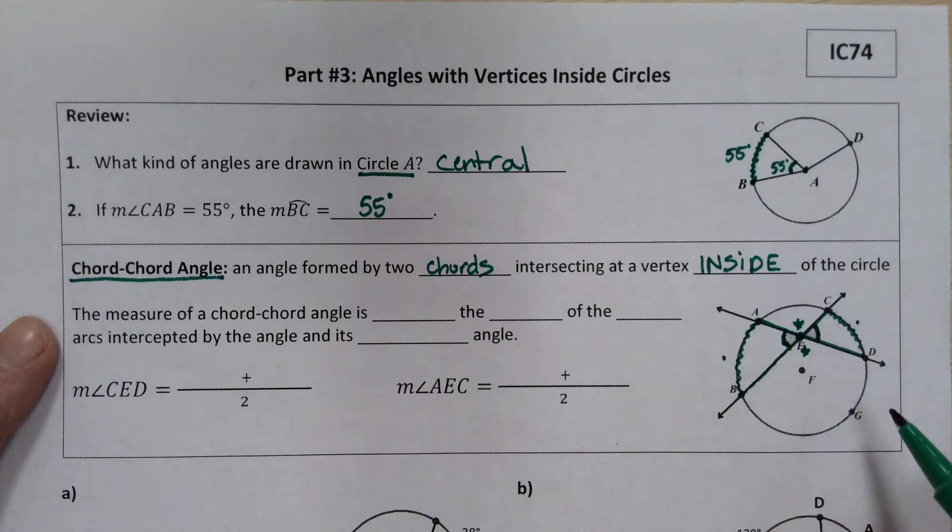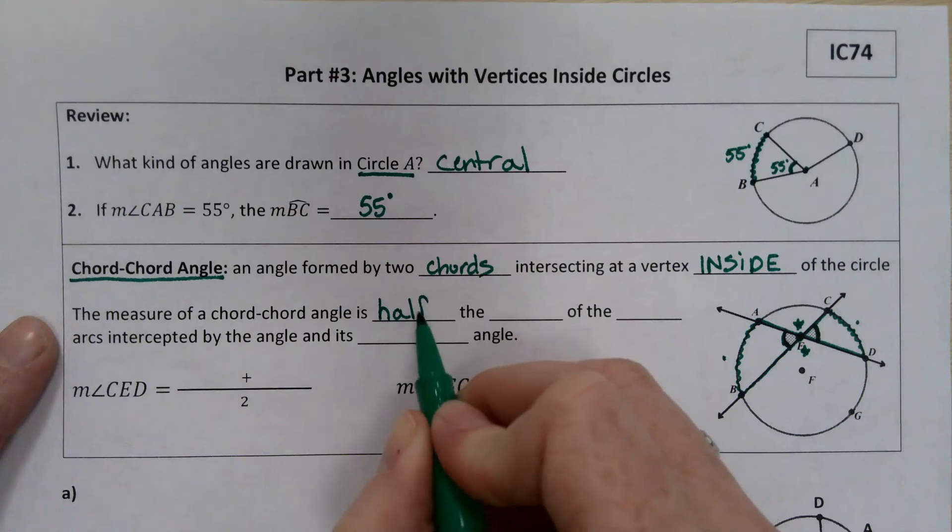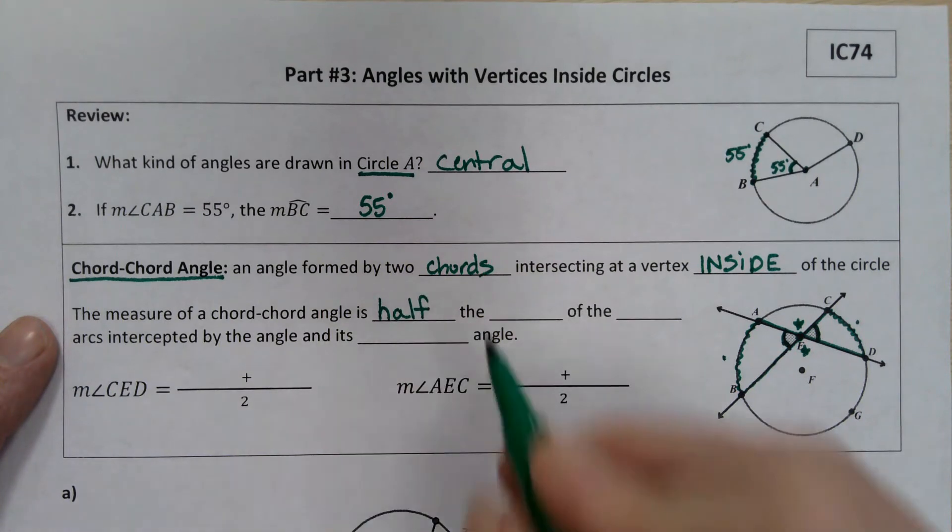And so what we end up having to do is average these two arcs. Averaging is something you might have done recently, but if you were averaging your grade, you would add up your grades and divide by the number there are. So we're going to add up these two intercepted arcs, and then we're going to divide by two or take half of that sum.